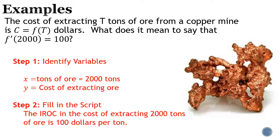Here is the statement cleaned up: 'The instantaneous rate of change in the cost of extracting 2000 tons of ore is 100 dollars per ton.' You have the IROC, the y context (cost of extracting ore), when you have 2000 tons of ore, and the derivative value of 100 per ton.